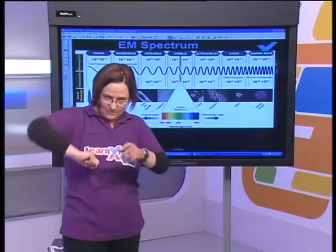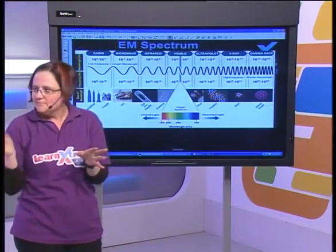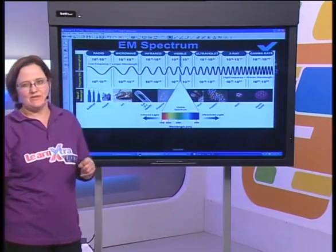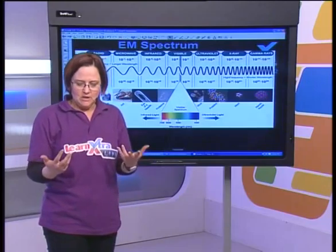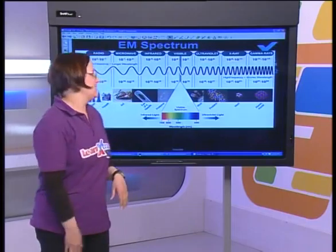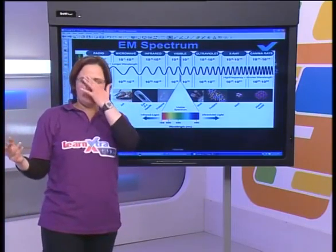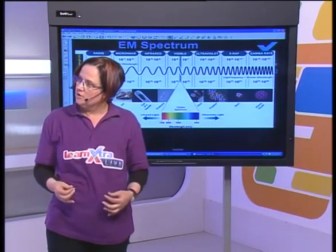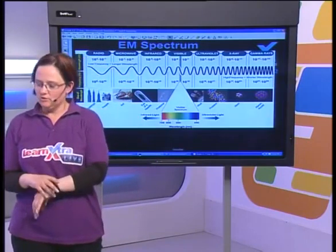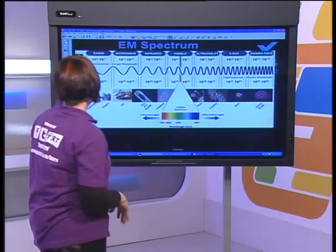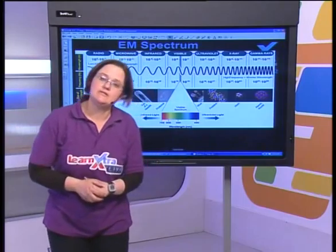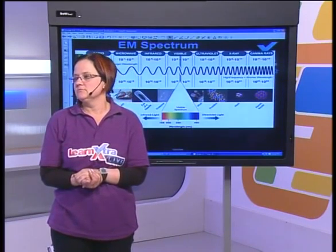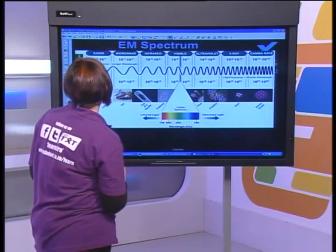Ultraviolet light in forensics — the black light concept — allows things to be photo-luminous and glow. Even the white part of a shirt will glow under UV light. As for visible light: if they ask what is the main use of visible light, don't overthink it — it's so you can see things.